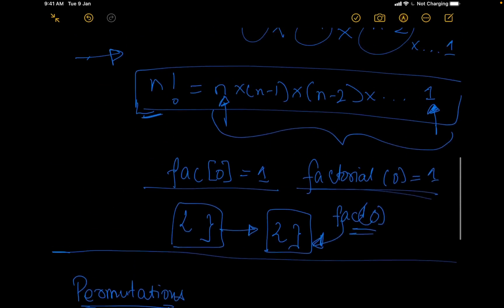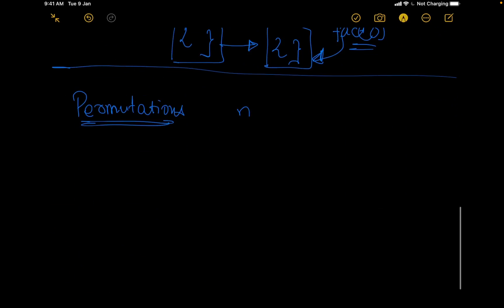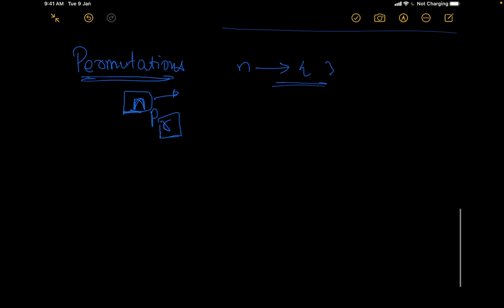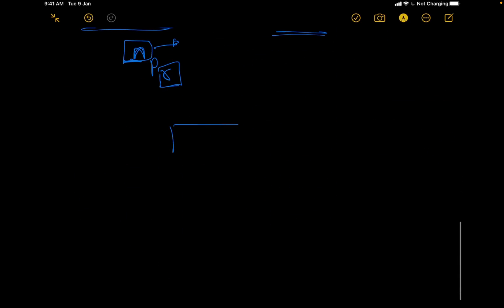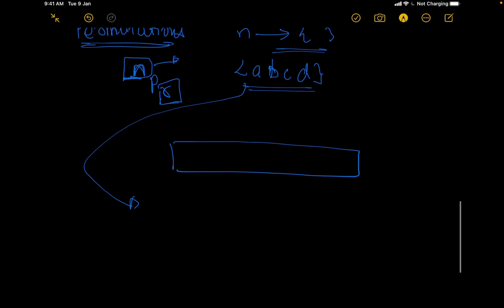What are permutations? When we discussed factorials, we said that given a set of n elements, we arrange all n elements. What if I ask you not to arrange all n elements, but only arrange r elements out of it? We call this nPr — we have a set of n elements and we have to arrange r elements out of it. Let us say our set is {a, b, c, d} and we want to arrange 2 elements out of it.